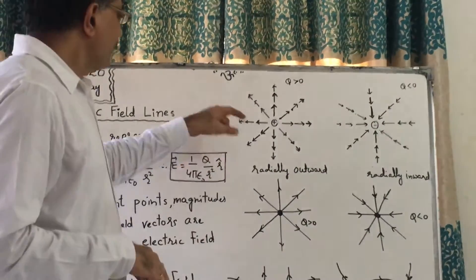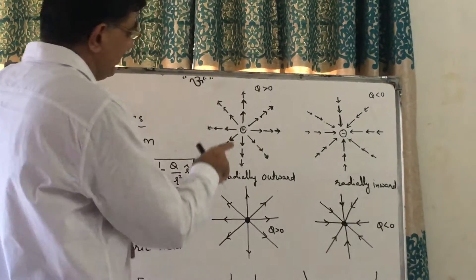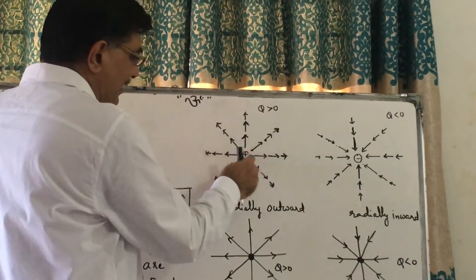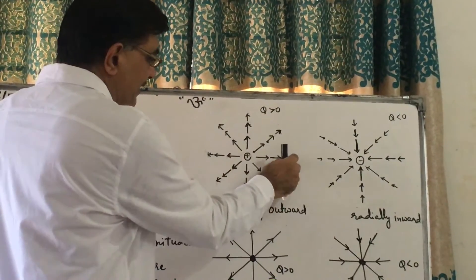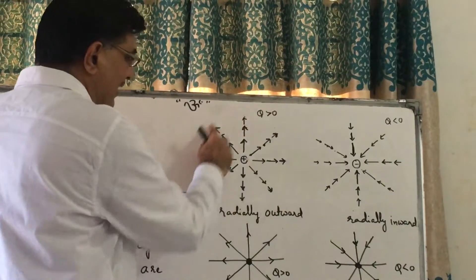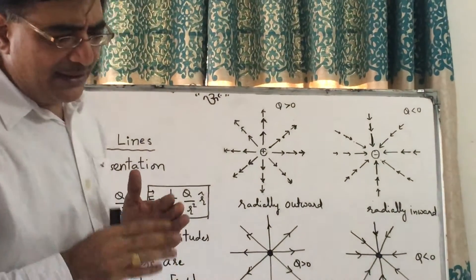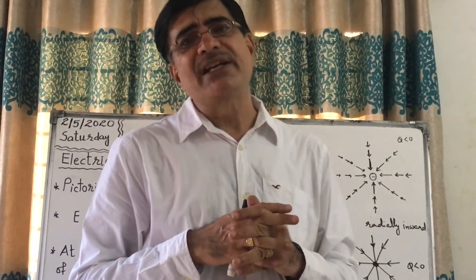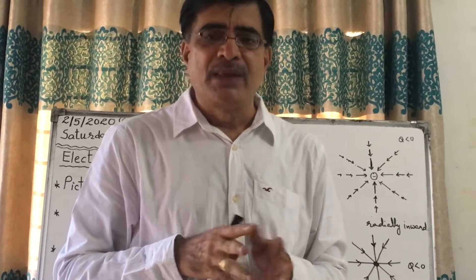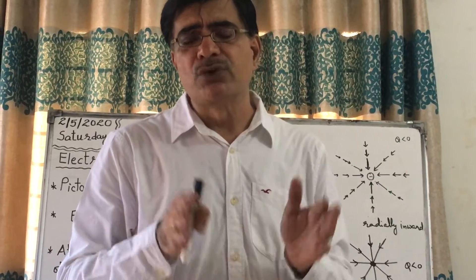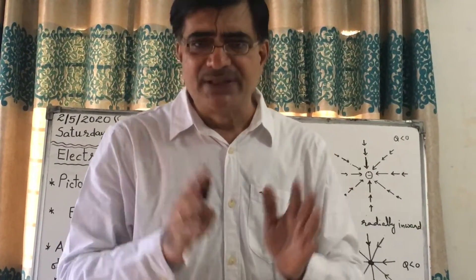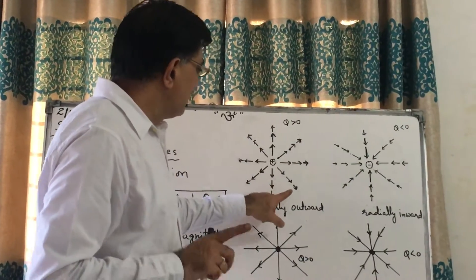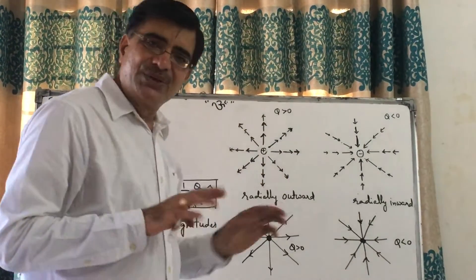Where the intensity is more, the density of the field lines is more. And where the intensity is less, the density is also less. So indirectly, density of electric field lines shows the value of electric field intensity at that point. More the electric field intensity, more the density of electric field lines. Less the electric field intensity, less the density.